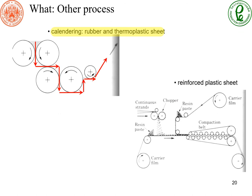The last process I want to mention is calendaring, a very popular process for rubber. We use many pairs of rolls to massage rubber into flat sheets. Then we add fibers and steel wires to create conveyor belts.